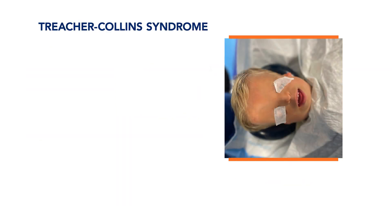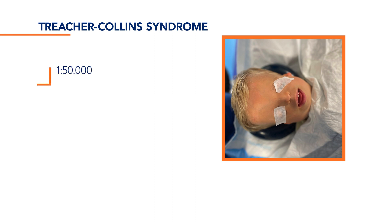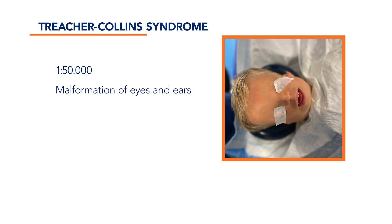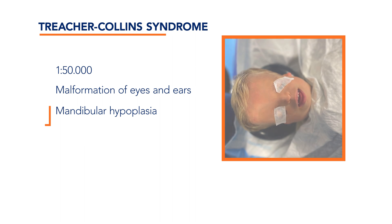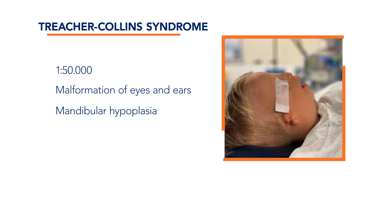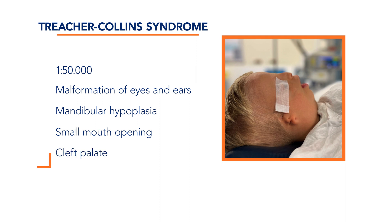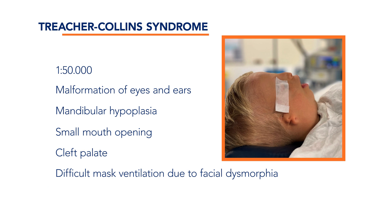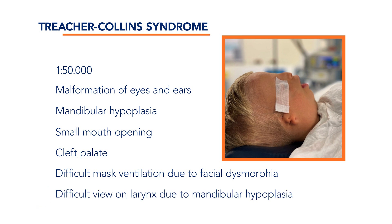Another syndrome notorious for a difficult airway is Treacher-Collins syndrome. Present in 1 in 50,000 births, the facial characteristics include malformation of the eyes and ears, mandibular hypoplasia, narrow nasal cavity or choanal atresia, a small mouth opening, and cleft palate. The combination of these features makes for difficult mask ventilation and a difficult view of the larynx.